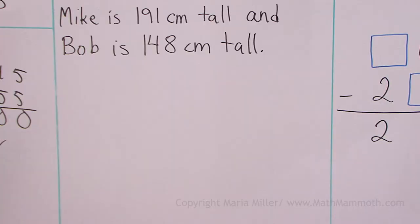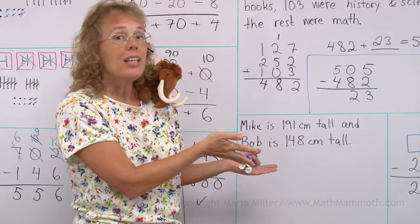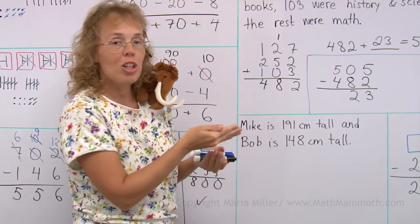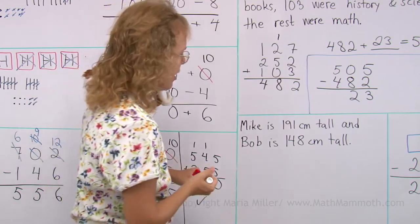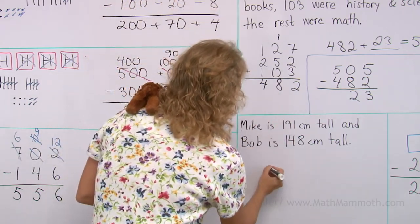I mean, if we subtract those numbers, then what? Then we find how much taller Mike is than Bob. Right? The difference in the heights. Let's do that. We're practicing subtraction, right?